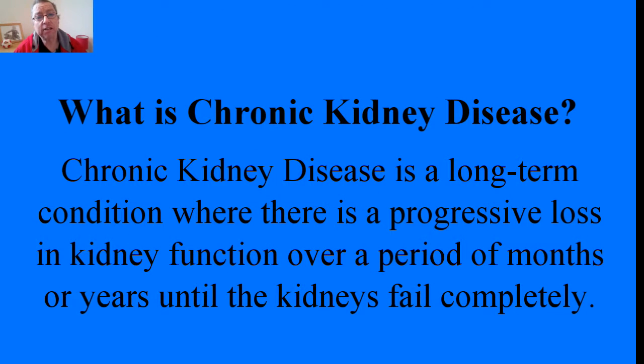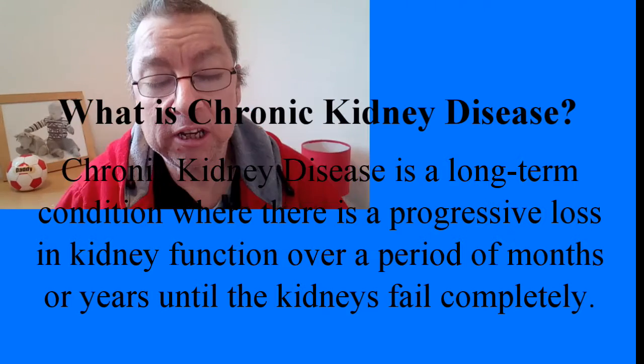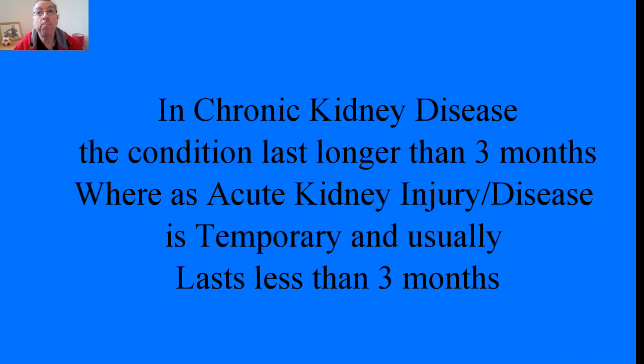So what is chronic kidney disease? Basically, chronic kidney disease is a long-term condition where there is a progressive loss in kidney function over a period of months or years until your kidneys start to fail and then fail completely. This is different from acute kidney disease or acute kidney injury in that the condition lasts more than three months.